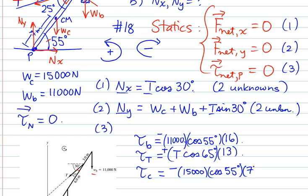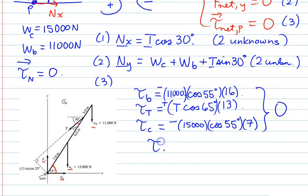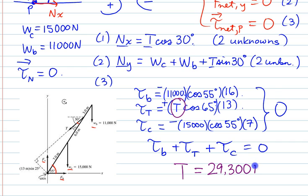If I add all these up, I'm going to get a net torque of zero. The torque from the box plus the torque from the tension plus the torque from the crane all equals zero. The only unknown that I see in that entire system of three things is the tension T, and if you crunch through this math very carefully, you're going to find that it's equal to 29,300 newtons.